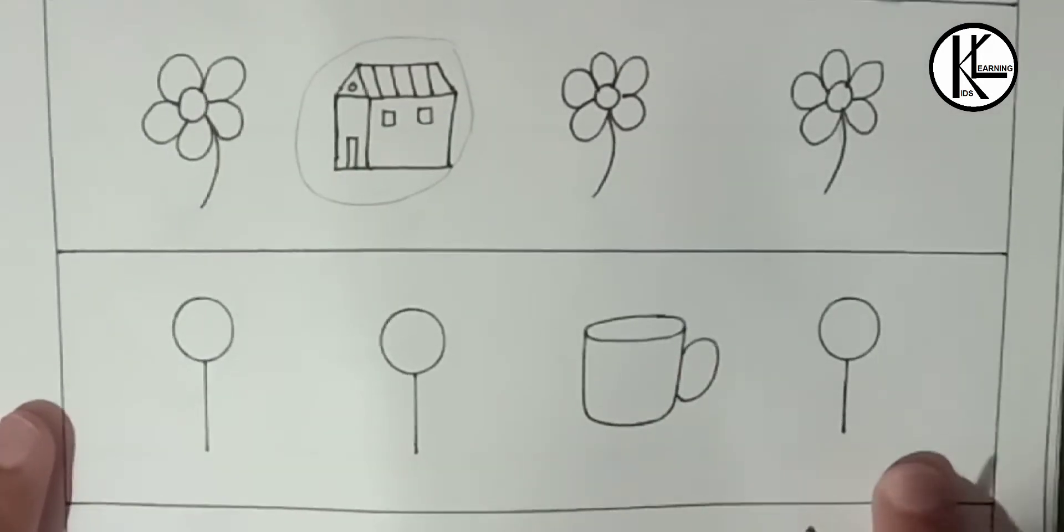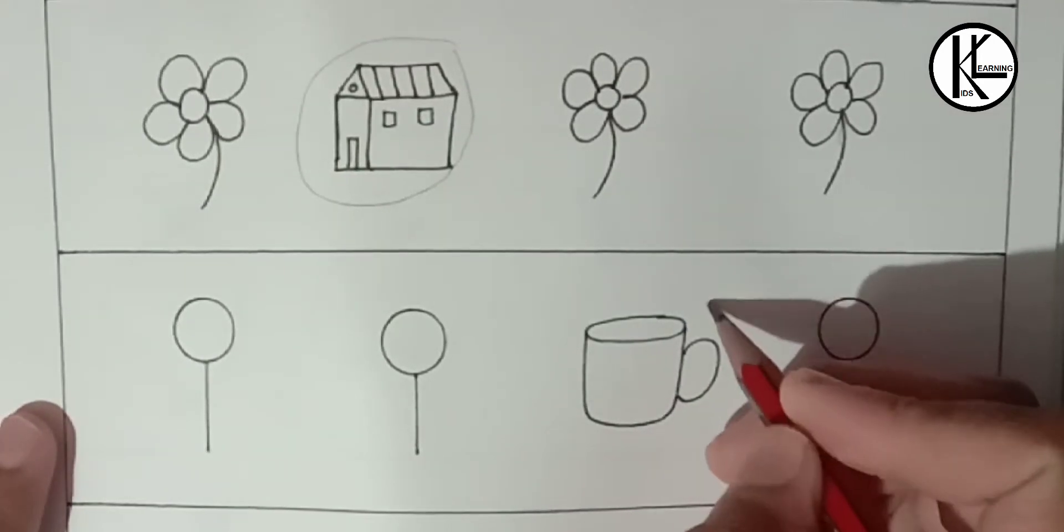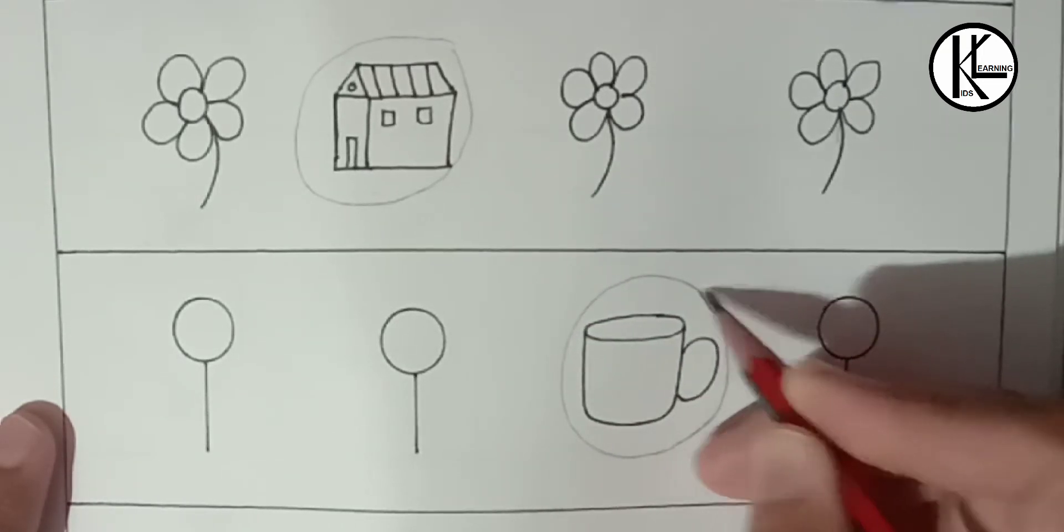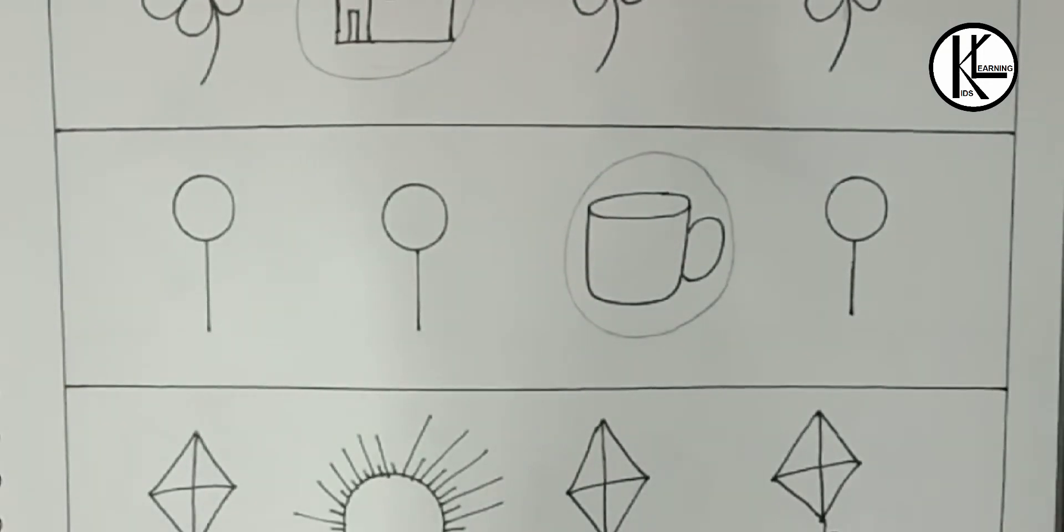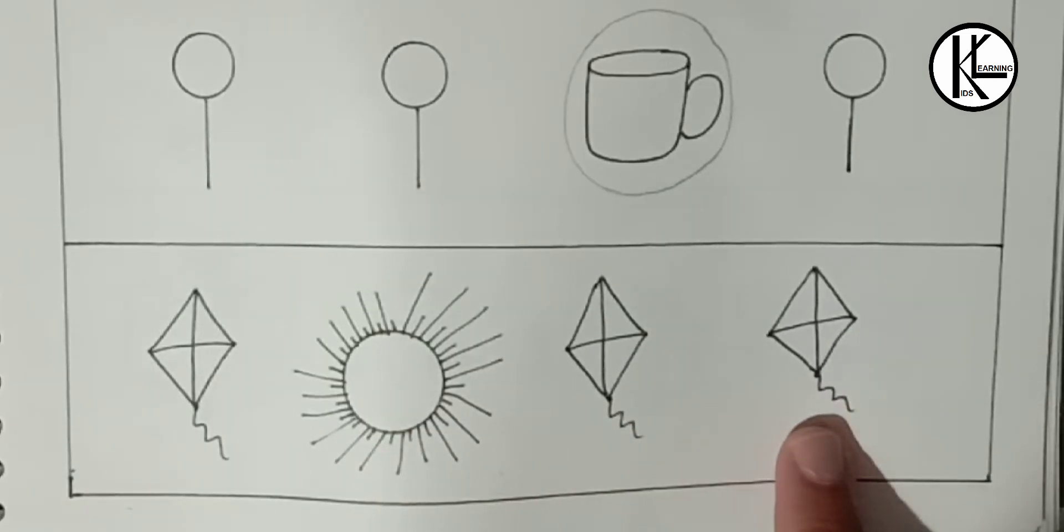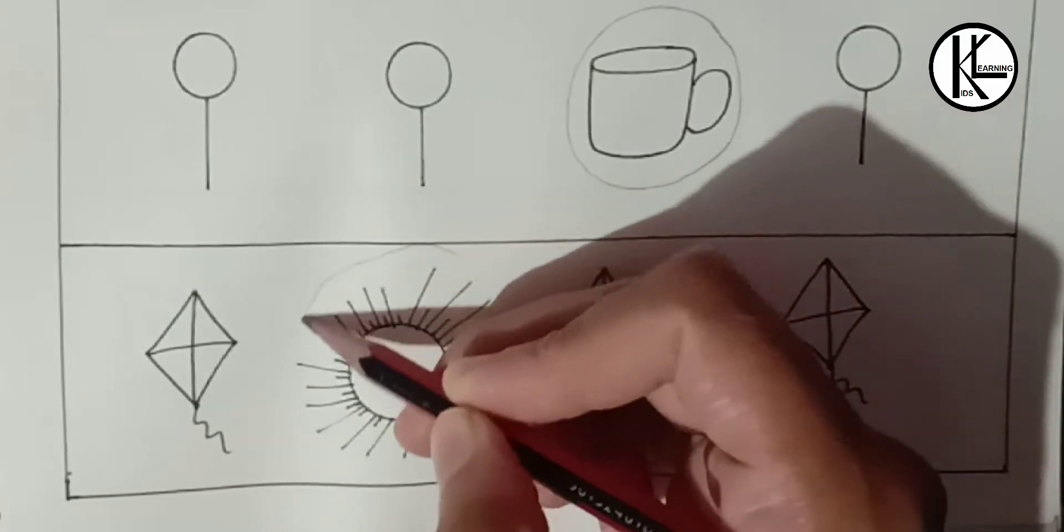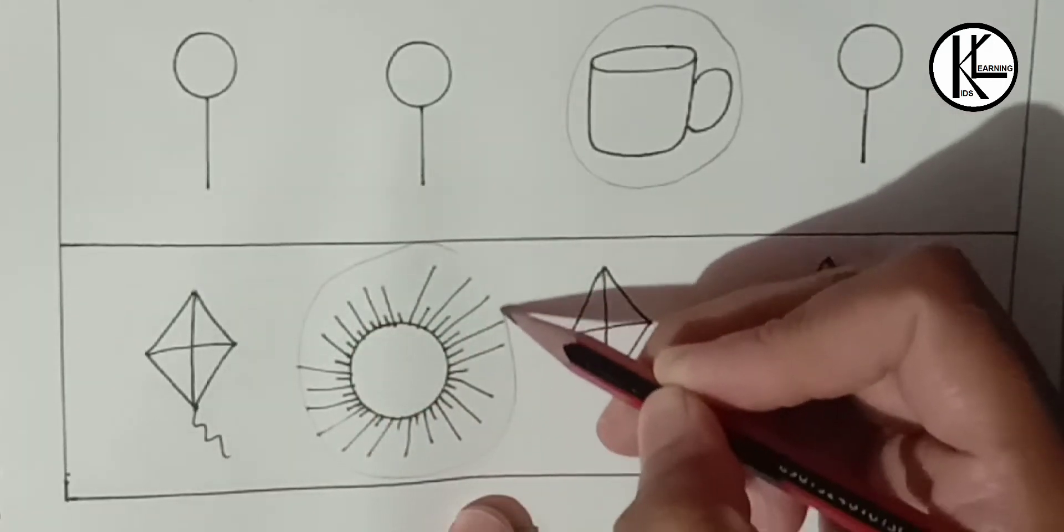On fourth we are having three lollipops and one cup. Cup is different. Cup is odd. Then kids have to circle this cup. In last we are having these three kites and one sun. Obviously sun is different. Then kids have to circle this sun.